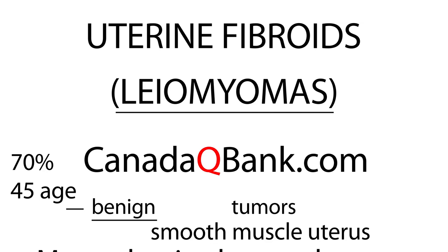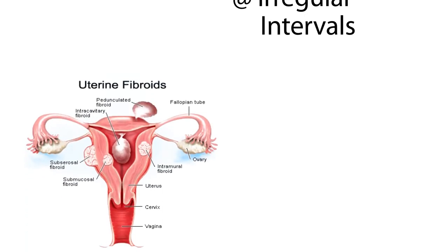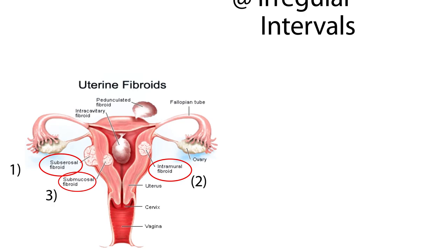Here is a diagram showing where uterine fibroids are most likely to be found. The number one location is subserous. The second most common is intramural, and the third most common is submucosal. Of course, this is a diagram of the uterus, and there are other places where a uterine fibroid can develop — including inside the uterus and a pedunculated type that is sort of outside.